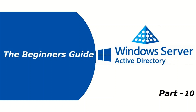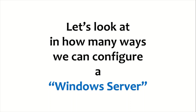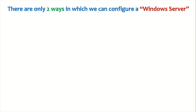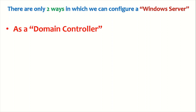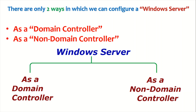Hello everyone, welcome to part 10 of our beginner's guide for Windows Server Active Directory. Today we are going to discuss the ways in which we can configure a Windows Server. A Windows Server means the Windows Server operating system. There are only two ways in which we can configure a Windows Server: as a domain controller and as a non-domain controller.